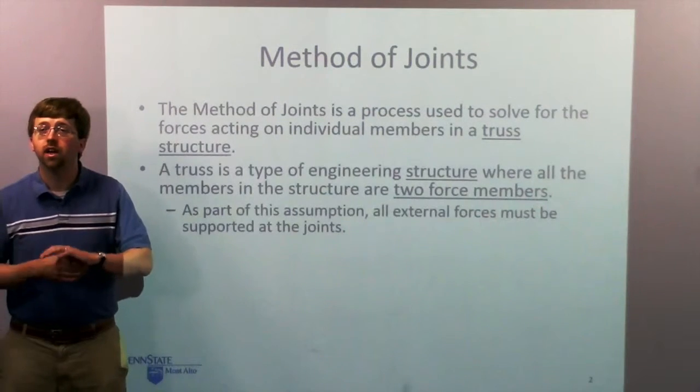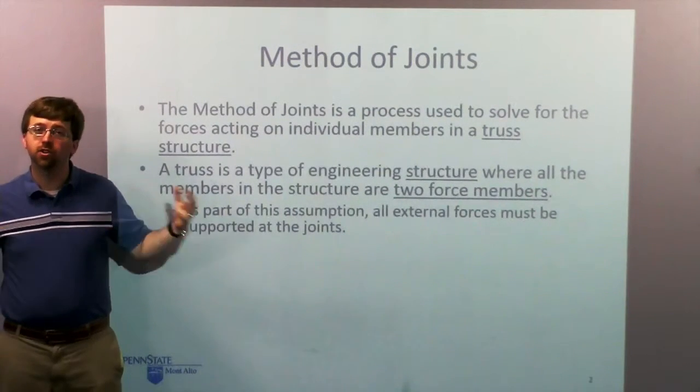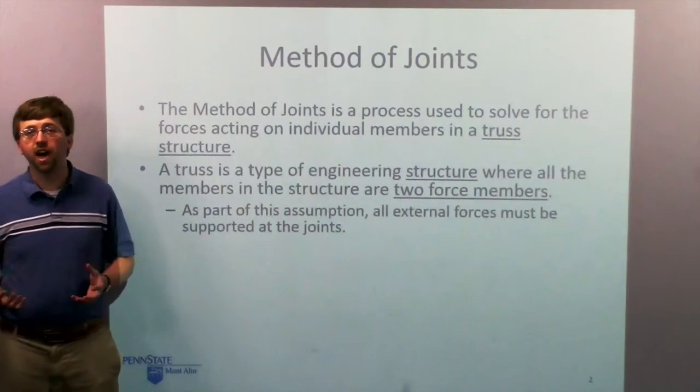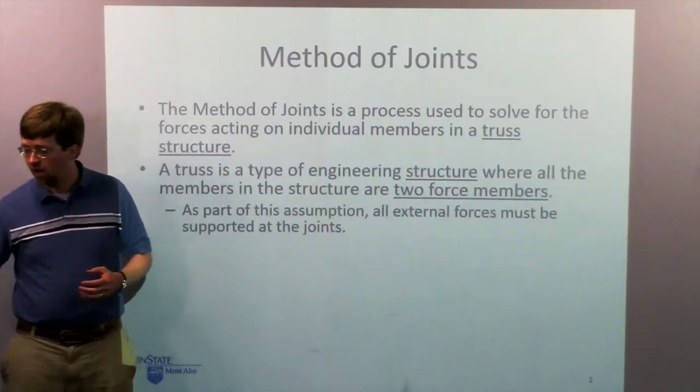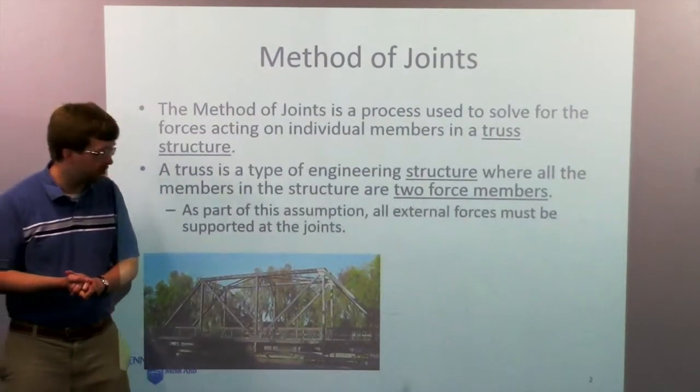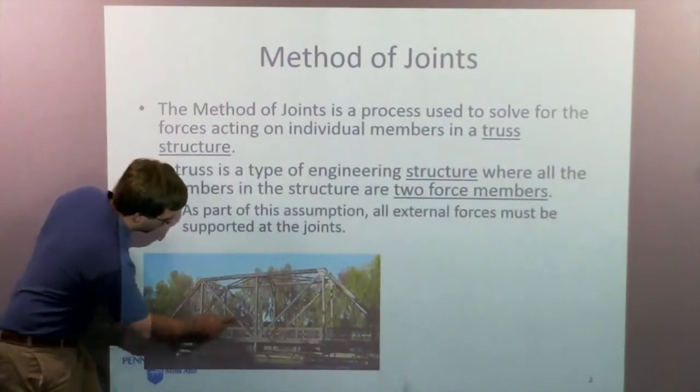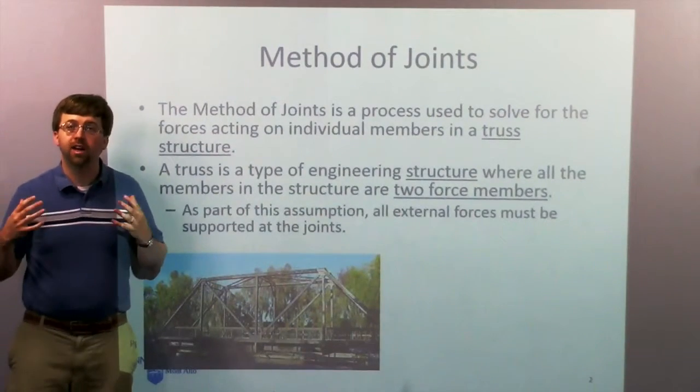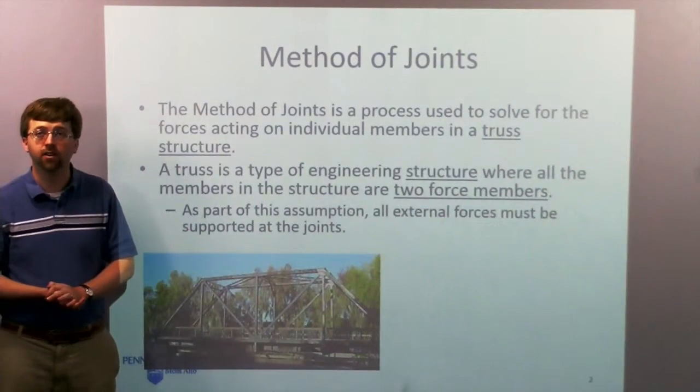Again, a truss structure in engineering is a structure, a collection of bodies, that is comprised entirely of two force members. So something like this bridge down here would be an example of a truss structure. Here we've got basically lots of long thin beams. They're only connected at the ends, and therefore there's only forces acting on the ends.